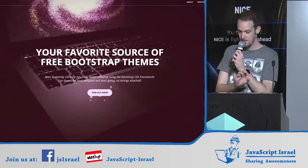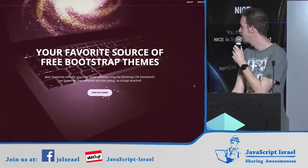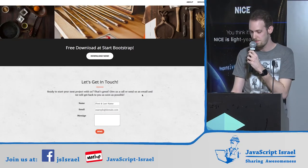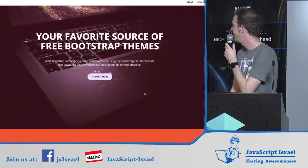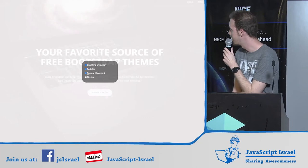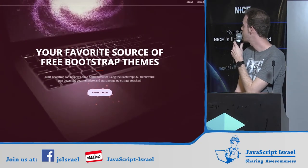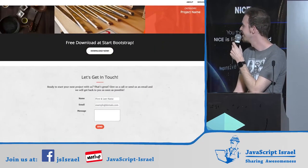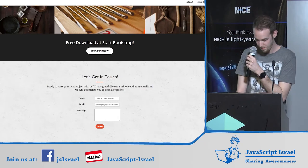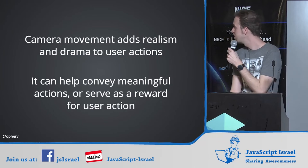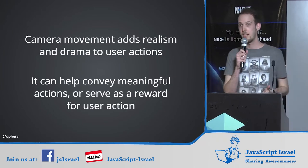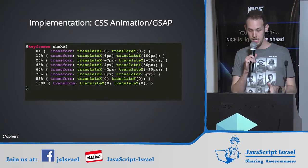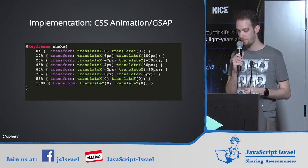Let's go back to our template. How do you use camera movement in a simple Bootstrap template? We have our contact button. Scrolling down isn't too interesting. But what if we added some camera movement — some sense of weight to the scrolling action? Camera movement adds realism and drama to user actions, and it helps convey meaningful actions or serves as a reward for user interaction. In my example, this was implemented using a simple CSS animation.